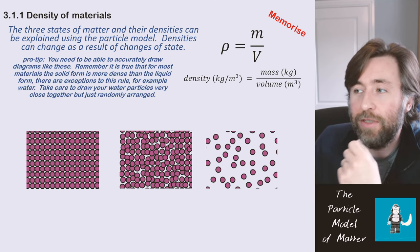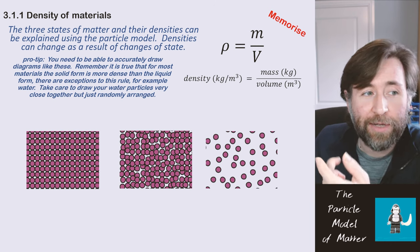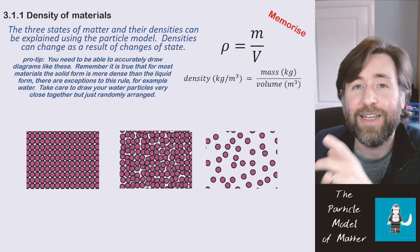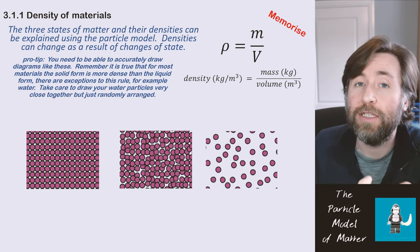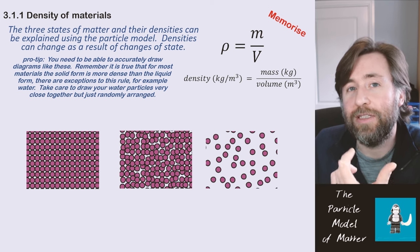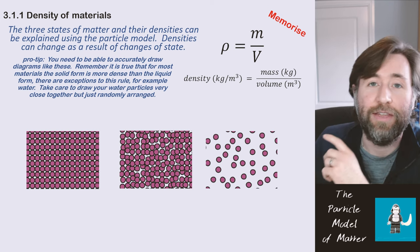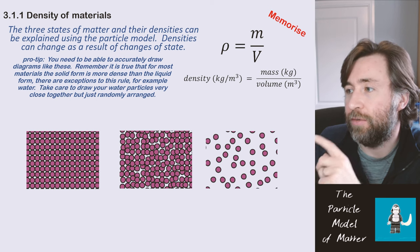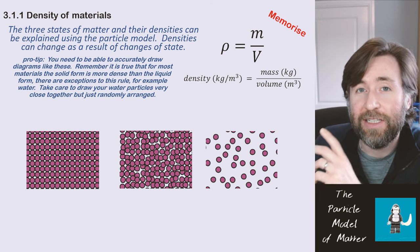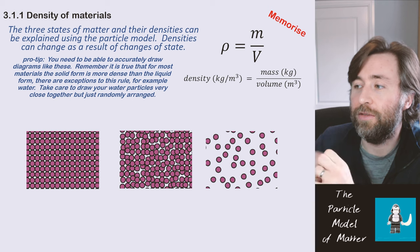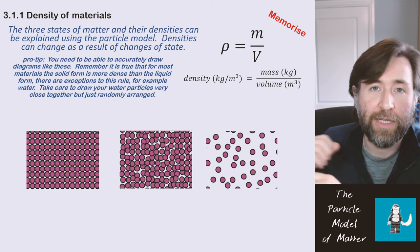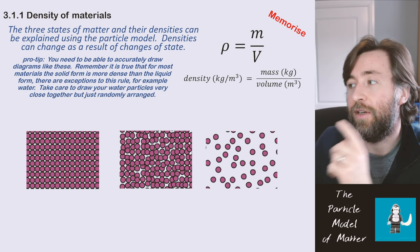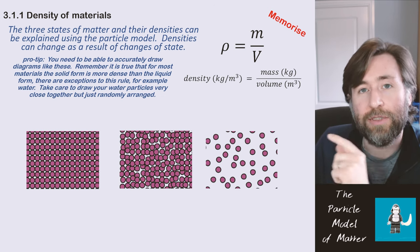So just remember you need to be able to draw these accurately, and whilst it's true that for most materials the solid is more dense than the liquid, that isn't true for every single material. For example, ice would float on water, meaning ice is actually less dense than the liquid form water. So just be careful not to space out your liquid particles too much. Essentially liquids—the difference is more that they are just touching and being able to change places rather than being spaced out largely. There is a large change in density from a liquid to a gas though.